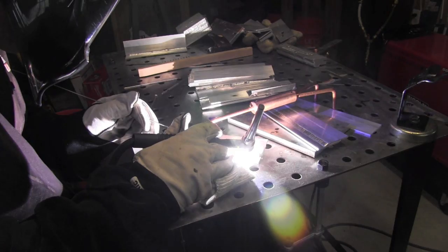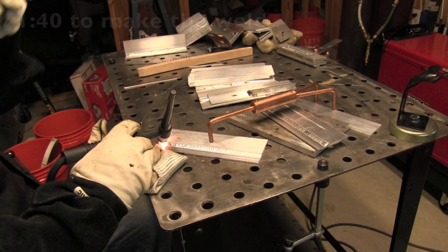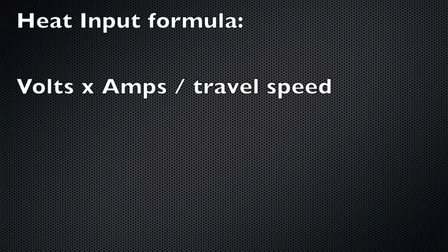Here's another shot. You can see it's just a very slow travel speed and that's not always a problem except that by doing this whole joint it's taking a whole minute and 40 seconds to make eight inches of weld. That makes for a lot of heat input.